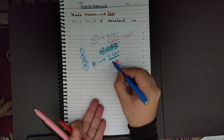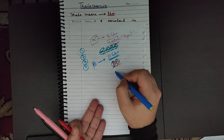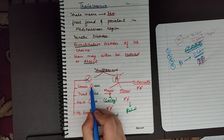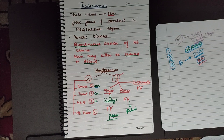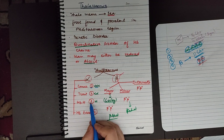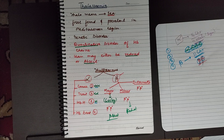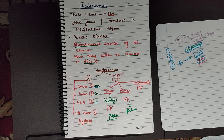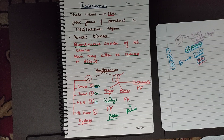For beta thalassemia, we have minor and major: if one allele is absent it's minor, if both are absent it is major. For alpha: if one is absent and three are present, it is the carrier condition; if two are absent and two are present, it is the trait condition; if three are absent and only one is present, it is HbH disease; and if all four are absent, it is HbBart's disease.